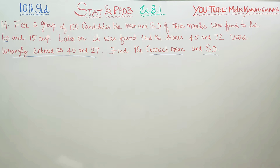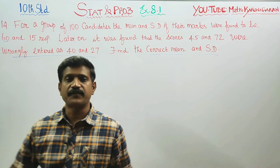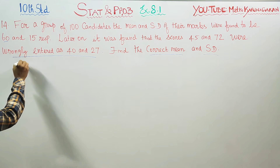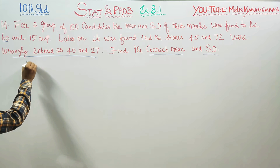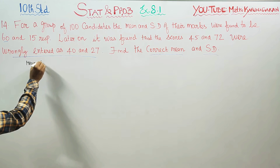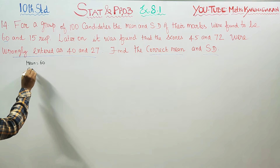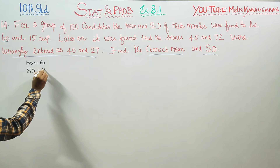Dear Class 10 standard students, in Exercise 8.1, sum number 14: for a group of 100 candidates, the mean and standard deviation of their marks are 60 and 15. Mean is equal to 60, and standard deviation is equal to 15.